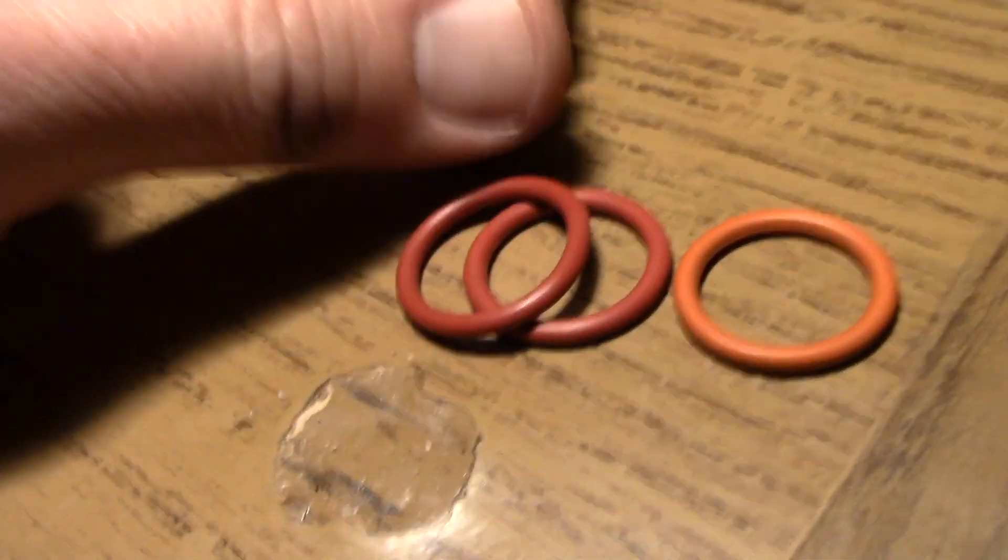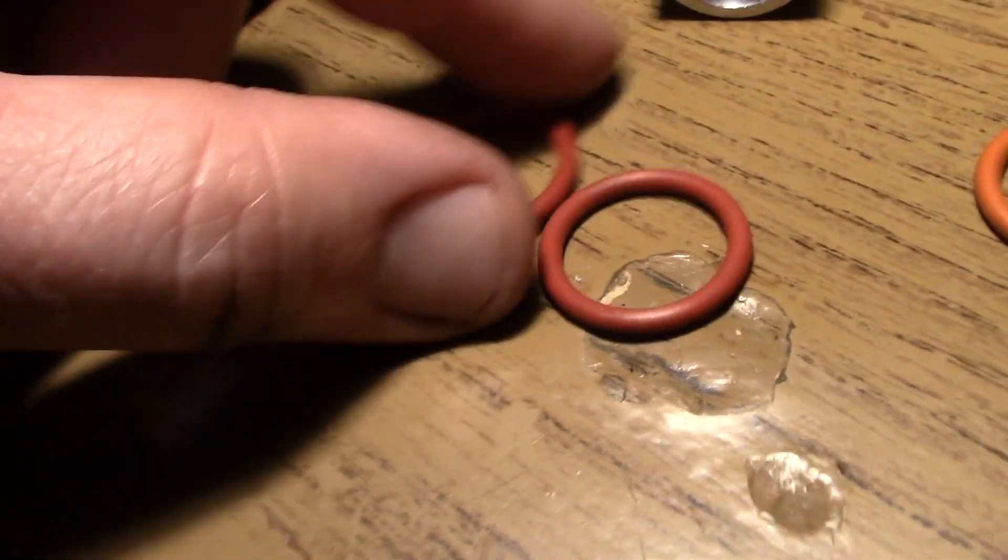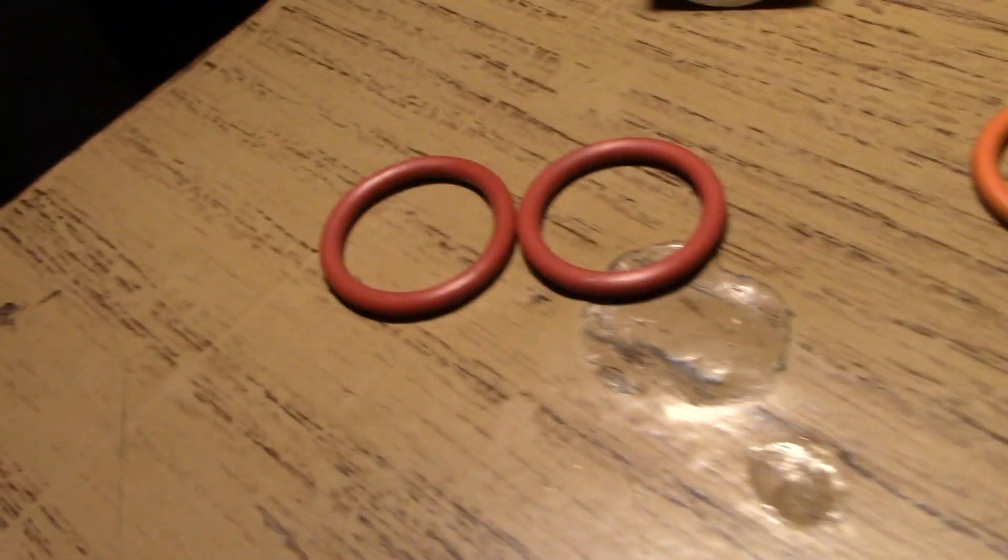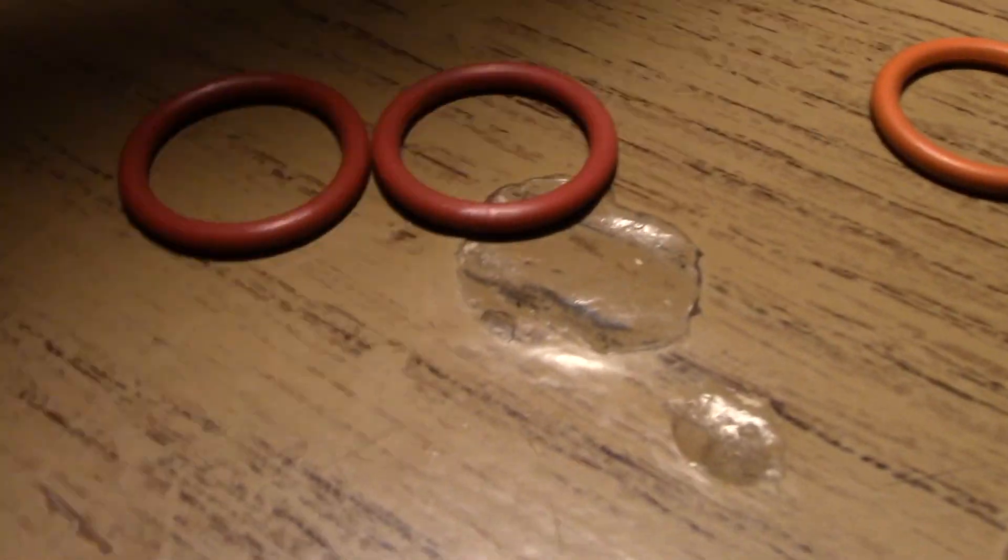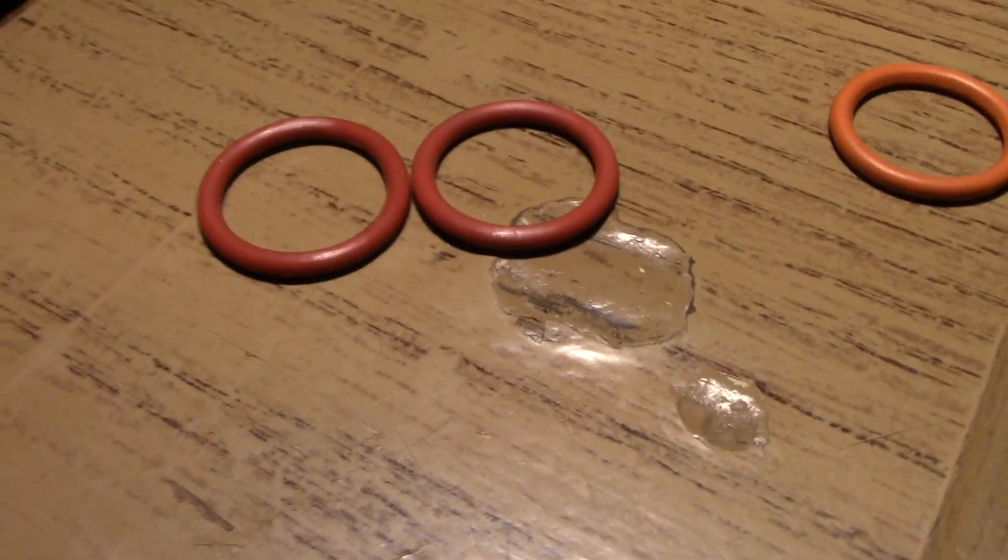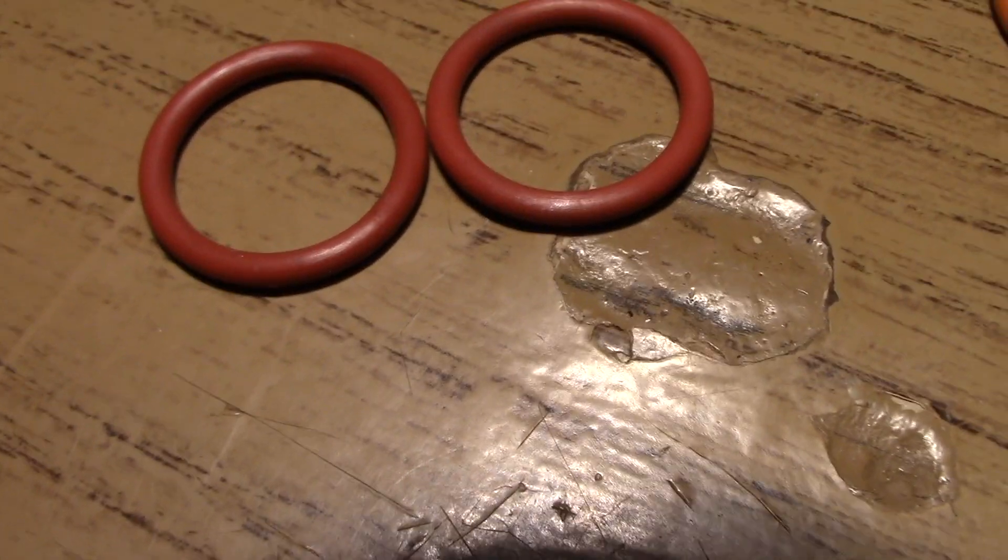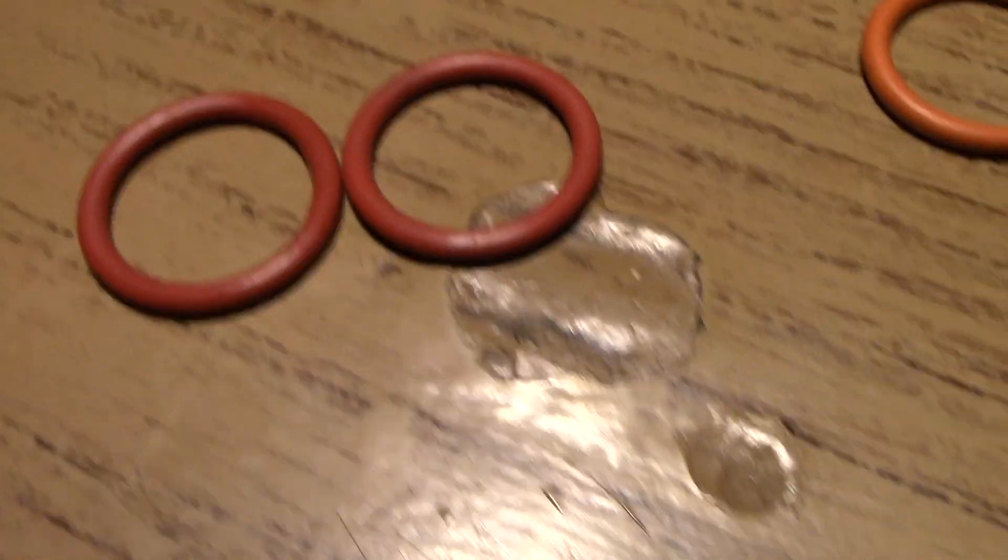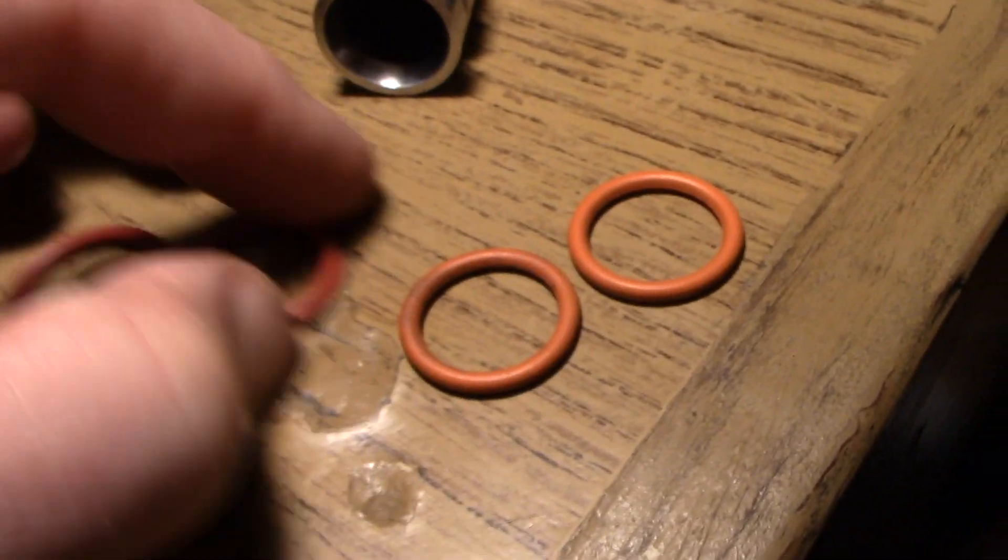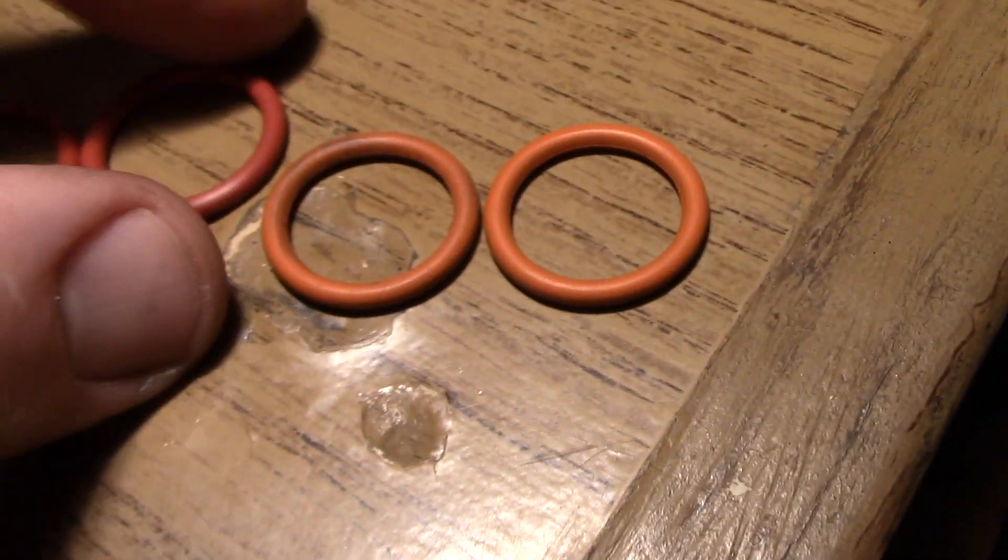So there's the ones that come on the aluminum elbow, whether you get it from ZZP or an auto parts store or Dorman or whatever. Just look at them. They're not really the greatest O-rings. They're not perfectly round. They're not fat and nice. Then these GM ones are nice and round and plump.